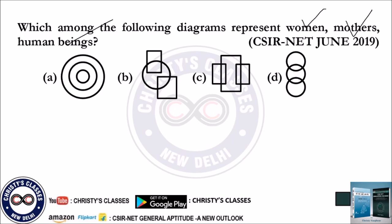So you should select an option which satisfies these two conditions: all mothers are women, and all women are human beings. That means the mother set should be inside the woman set, and the woman set should be inside the human being set.